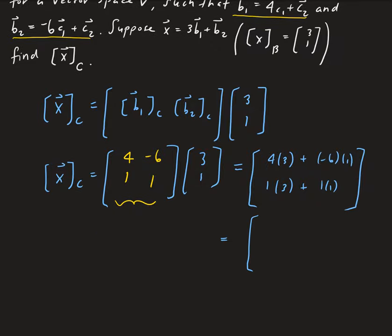So that's going to give us, so we have 12 minus 6, that's going to give us 6, and then we have 3 and 1, which gives us 4.